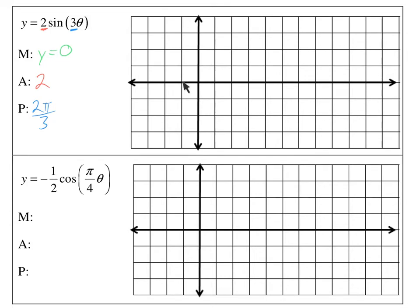Since the midline is 0, that means the middle of the graph is on the x-axis. My period is 2 pi over 3, so that's going to be important for helping me figure out how wide this graph is. And I'm going to go up and down 2 each time.